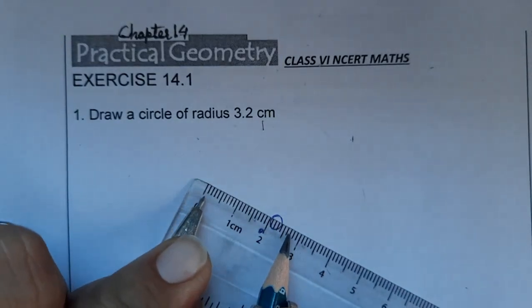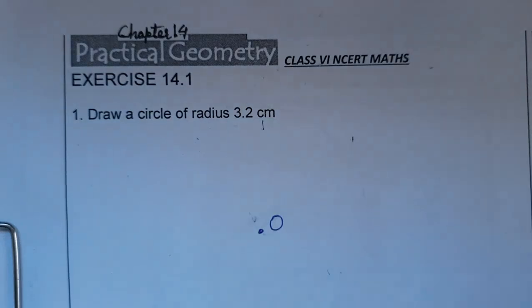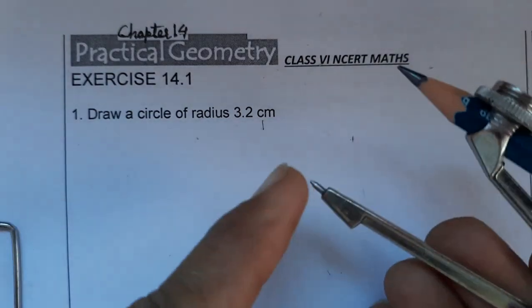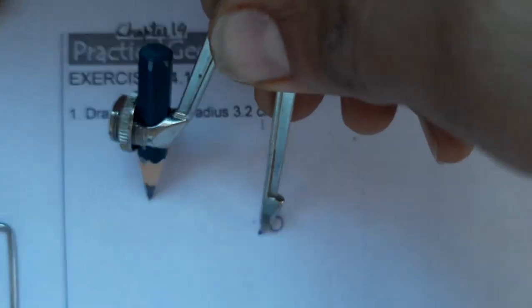This is zero, bring it up to 3.2. This is 3.2. Now keep the pointer on center O and draw a circle.